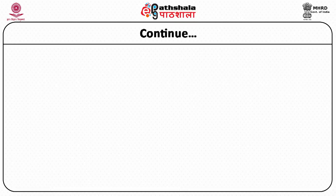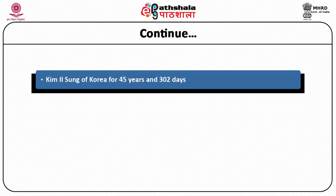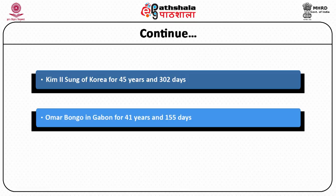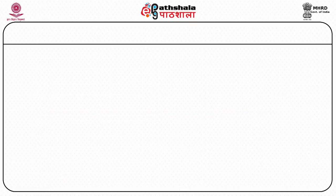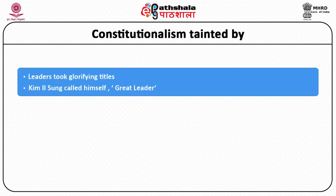If 36 or 35 years was not enough, we have the example of Kim Il-sung of Korea, who ruled for 45 years. We have Omar Bongo in Congo, who ruled for 41 years and 155 days. We have Gnassingbé Eyadéma in Togo, who ruled for 37 years and 297 days. Then these leaders glorify themselves — constitutionalism is further tainted when leaders give themselves names to make themselves immortal and create a fierce psychosis in the minds of the people.